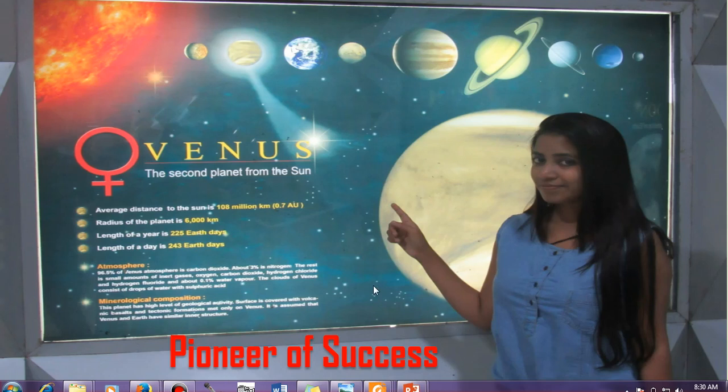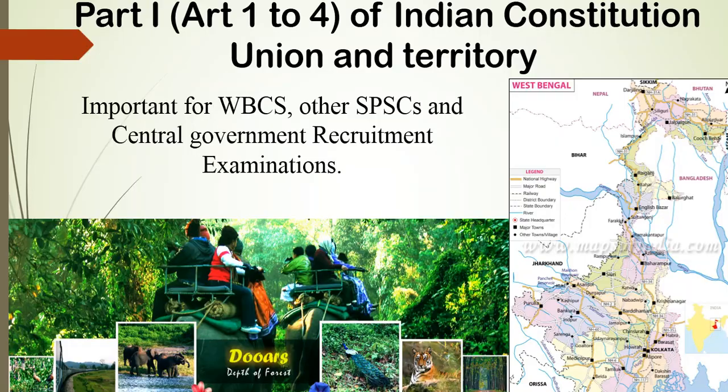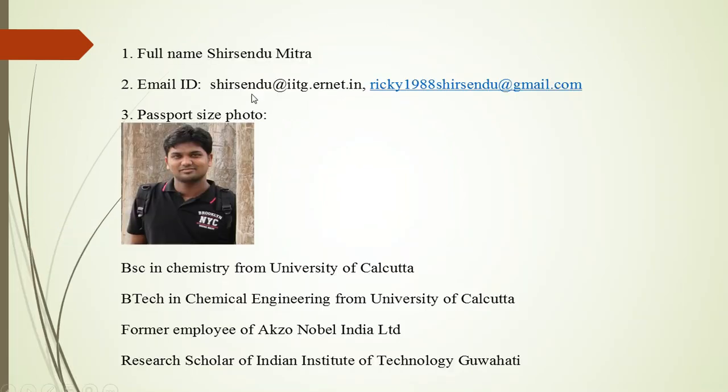Hello friends, welcome to Pioneer of Success, an online free educational institute. We are continuing with the WBCS series. Today's topic is Part One of the Indian Constitution, covering Articles 1 to 4, which deals with the Union and Territory. This video is important for people appearing for WBCS 2018 preliminary examination, mains WBCS, and also for other SPSC and central government examinations.